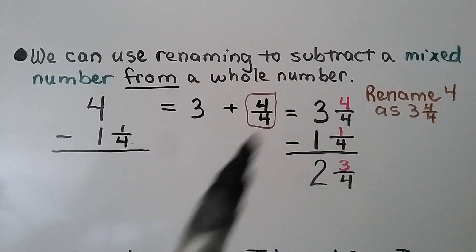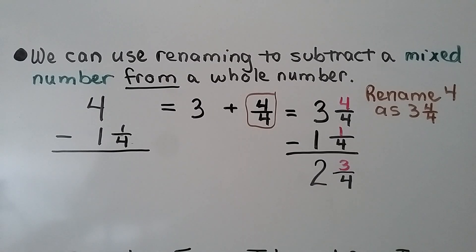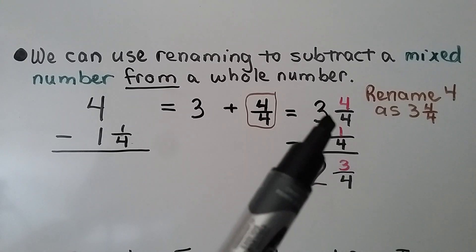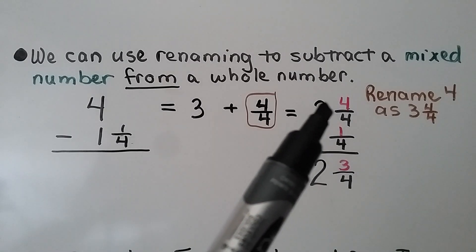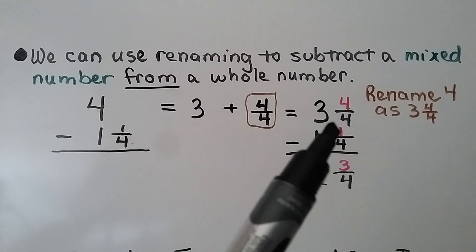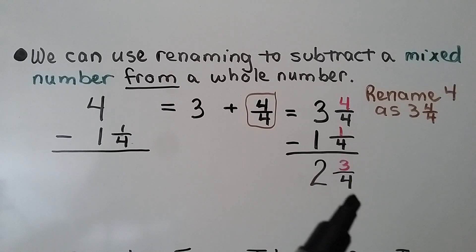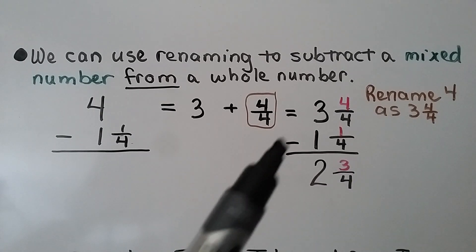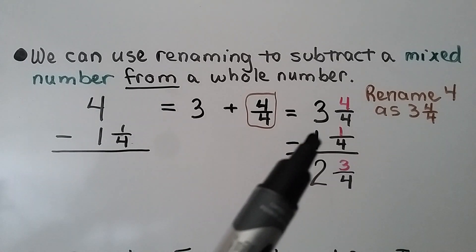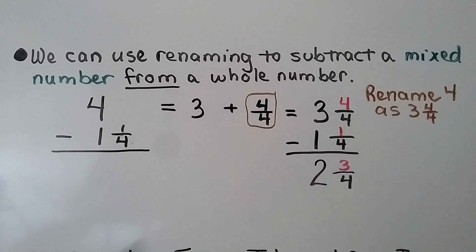We have 3 and 4 fourths. We look at the numerators: 4 minus 1 is 3. We have like denominators, so we have 3 fourths. We do 3 minus 1 is 2. That gives us 2 and 3 fourths.